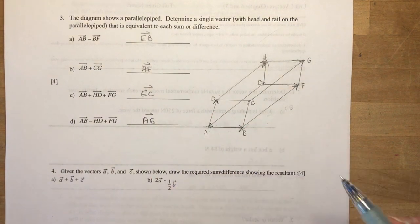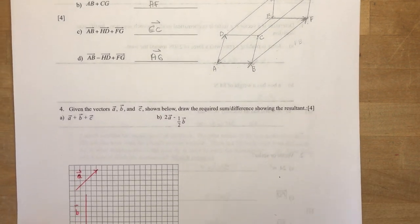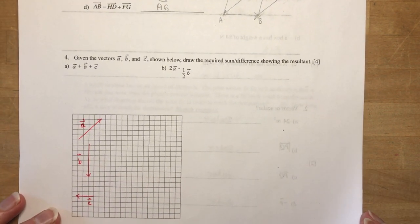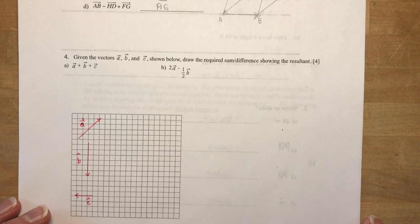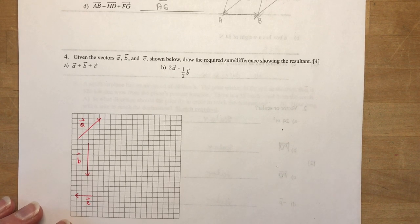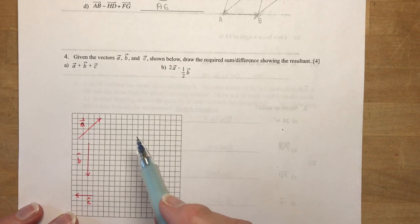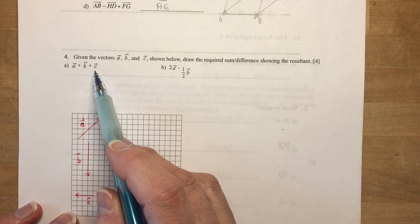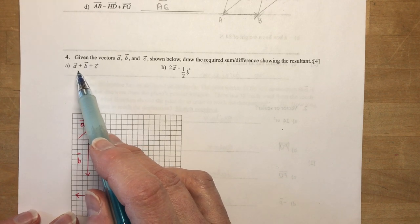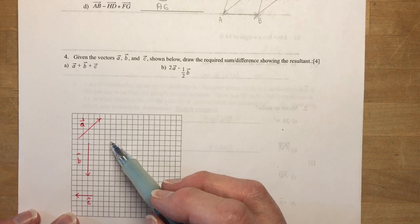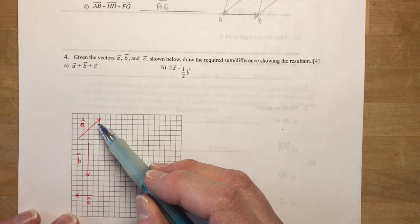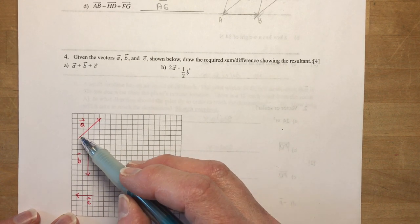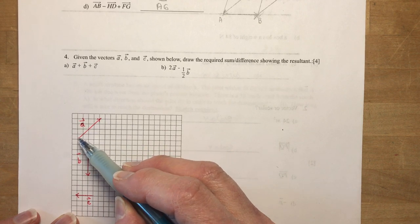Hope you followed along on those. They always seem a little trickier. Okay, given the vectors A, B and C shown below, draw the required sum slash difference showing the resultant. Make sure you answer questions properly. A lot of my students forgot to show the sum in the end. So I want to do A plus B plus C. So A and then I'm going to add the B and add the C.